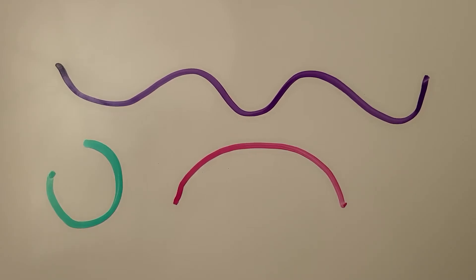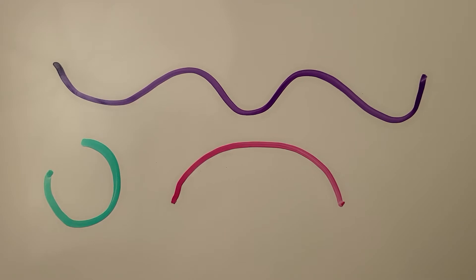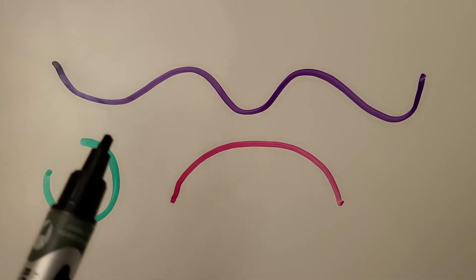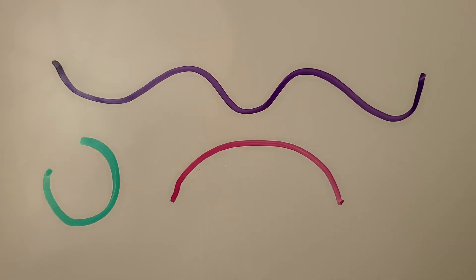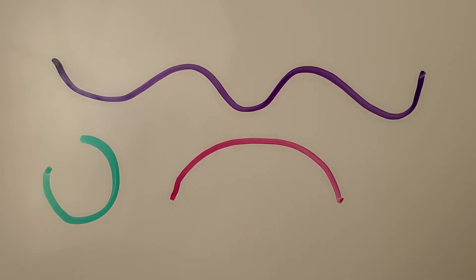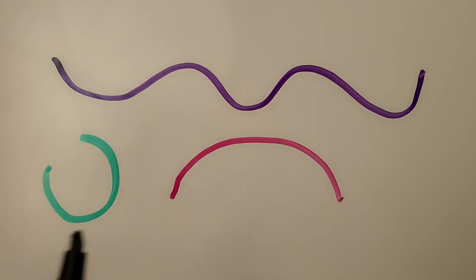These lines are not straight — they curve. The purple line has many curves. Some lines are straight and some are not straight, so sometimes we'll see straight lines and sometimes we won't. If they're not straight, it's because they have a curve.